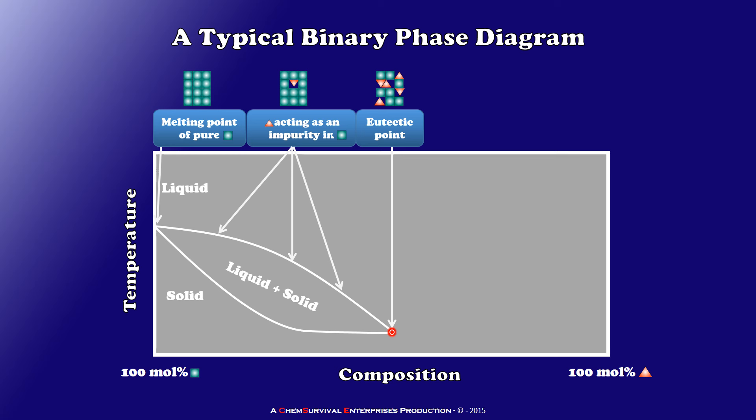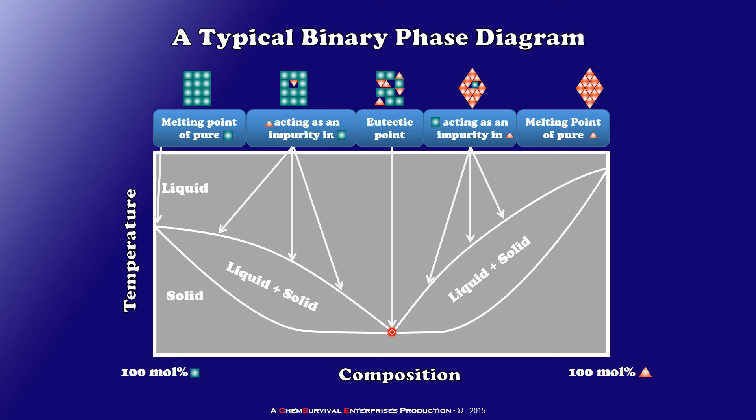As I continue to add more and more red compound to my mixture, I see my melting point begin to increase again, eventually reaching the melting point of the pure red compound. So I've created another region of my diagram where liquid and solid can coexist, but this time because of the green compound acting as an impurity in the red as opposed to vice versa. And of course, as my concentration was closer and closer to 100% red, I ultimately approached its melting point and we finally reached it at 100% red compound.